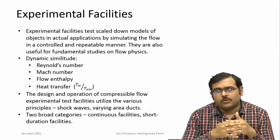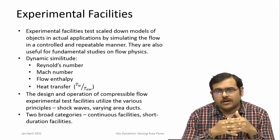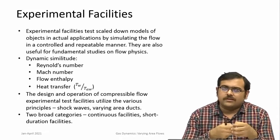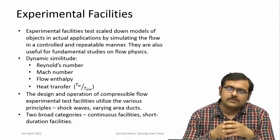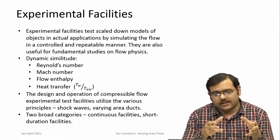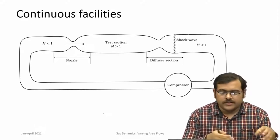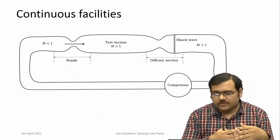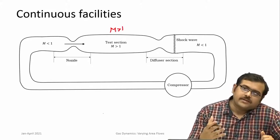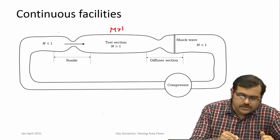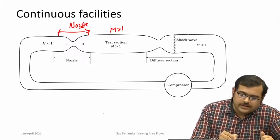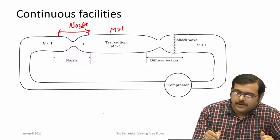When designing compressible flow wind tunnels, we obviously use a lot of principles of varying area ducts, shock waves, and how they interact. Wind tunnels are generally categorized as continuous flow facilities and short duration facilities. For example, this is a schematic of a continuous flow facility. We know now that to produce a Mach number greater than 1 you need to provide a significantly higher pressure — that is, a high pressure ratio across the nozzle. This is a nozzle in a nozzle block. The nozzle converts a subsonic flow to a supersonic flow which is then maintained in the test section.